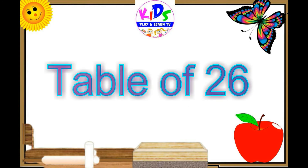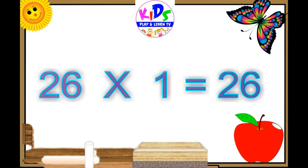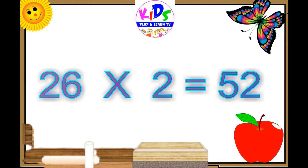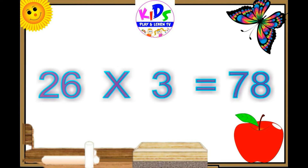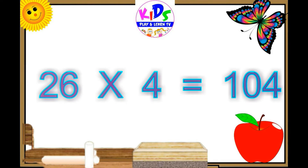Hello students, today we are going to learn table of twenty-six. Twenty-six ones are twenty-six. Twenty-six twos are fifty-two. Twenty-six threes are seventy-seven. Twenty-six fours are one hundred four.